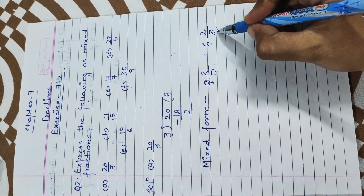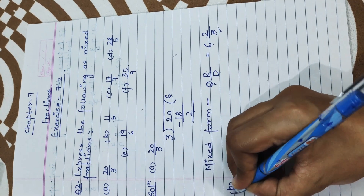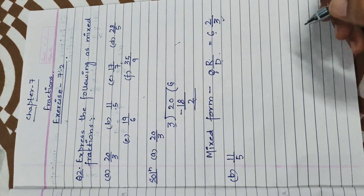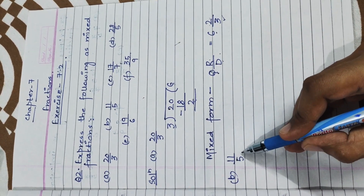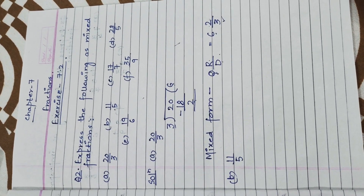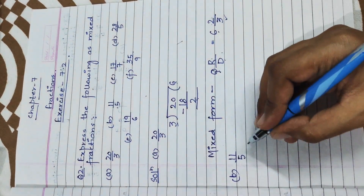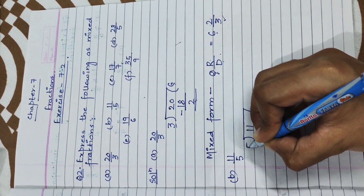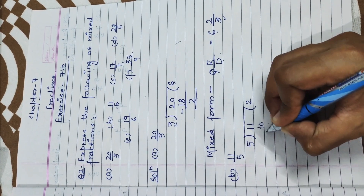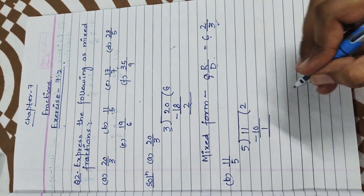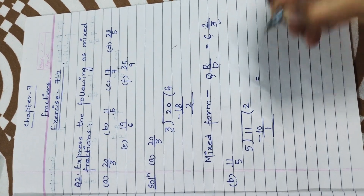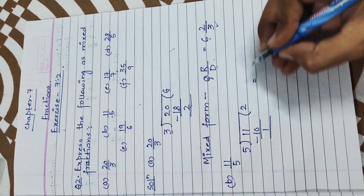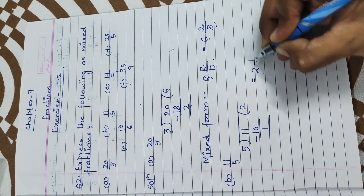Part B is 11 upon 5. Again we convert this improper fraction into mixed form. It is an improper fraction because the numerator is greater than the denominator. We divide 11 by 5 — 5 twos are 10, subtract to get remainder 1. The answer is 2 whole 1 upon 5.